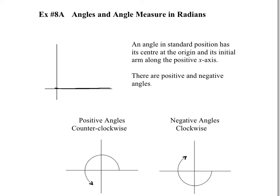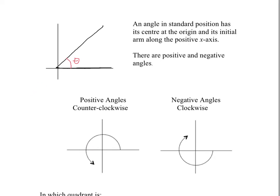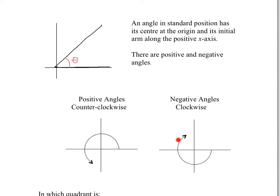And then has a terminal arm that falls somewhere else. For example, this would be a terminal arm, which would mean there would be an angle formed right here. There's positive and negative angles. If you go this direction, counter-clockwise, that's a positive angle. And if you go the opposite direction, that's a negative angle. Notice that both of them start on the positive x-axis.